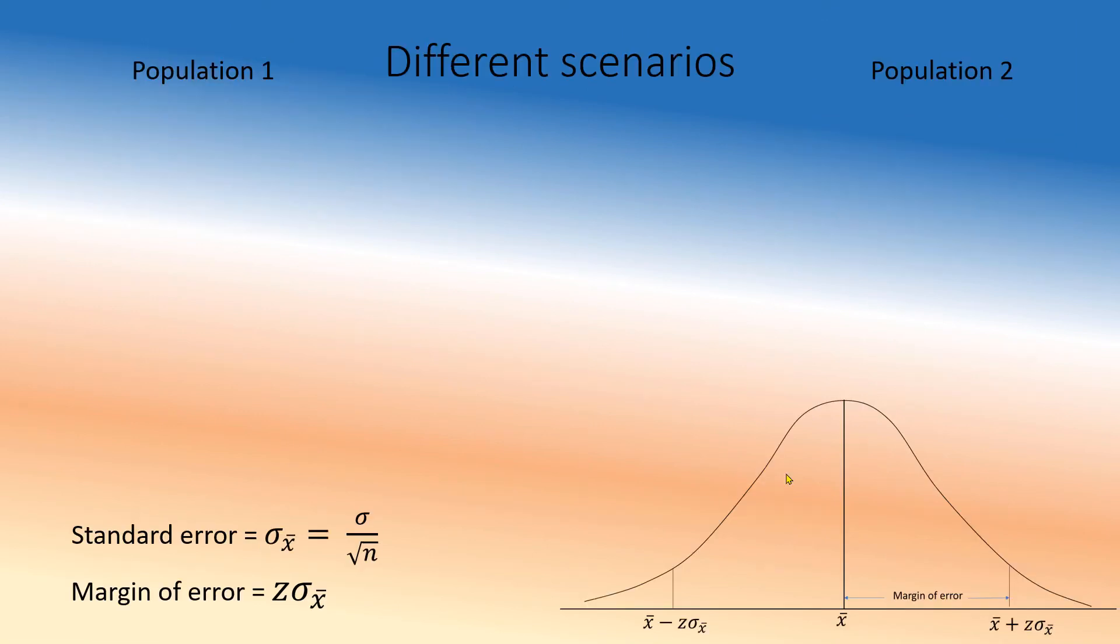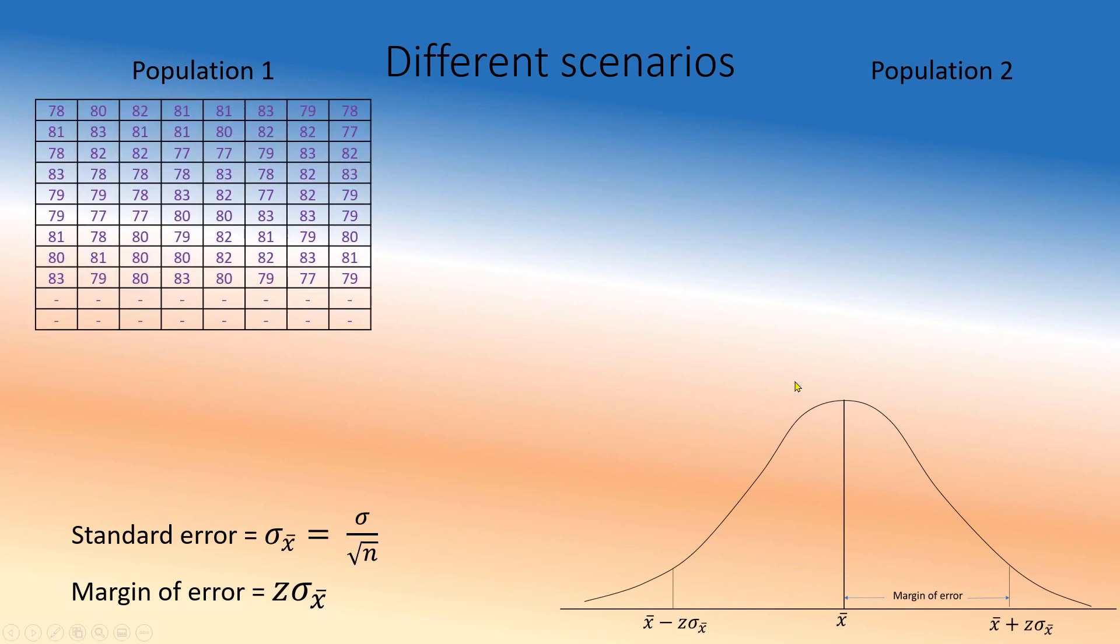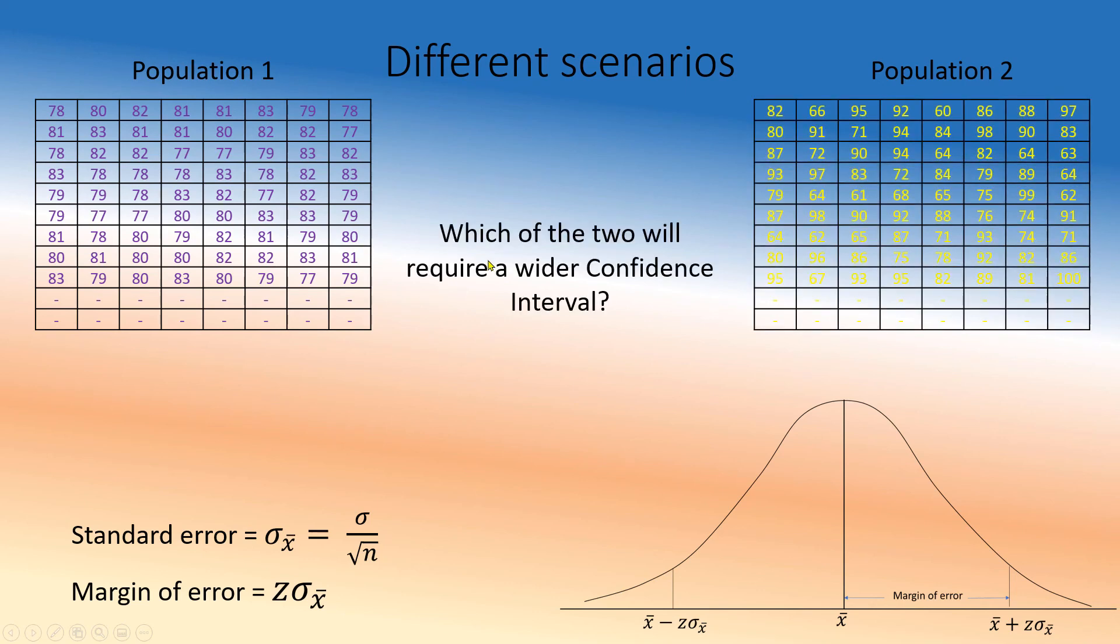Different scenarios. I have two populations here, population one and population two. Which of the two will require a wider confidence interval? In this case, the mean is 80.13 and sigma is 2.03, tightly packed.